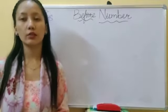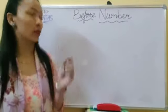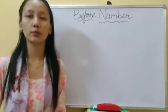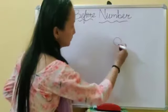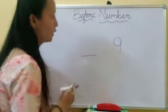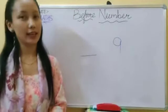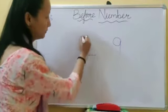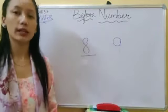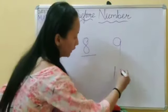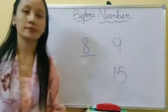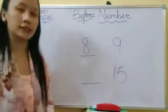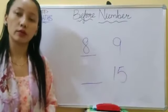Now let's do some examples to understand 'before number'. Students, tell me what comes before 9? Yes, 8 — very good! Again, tell me what comes before 15? What comes before 15? Yes, 14 — very good!